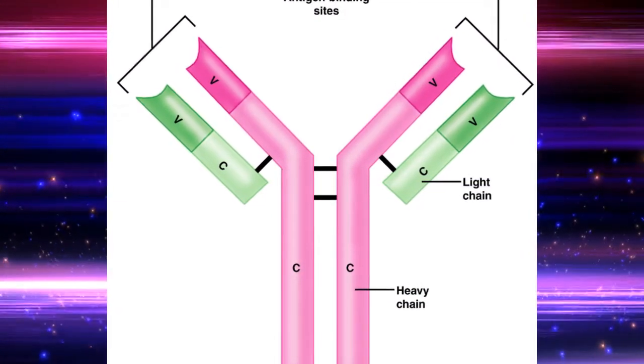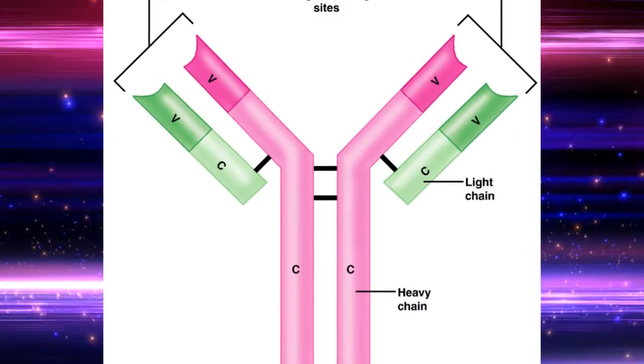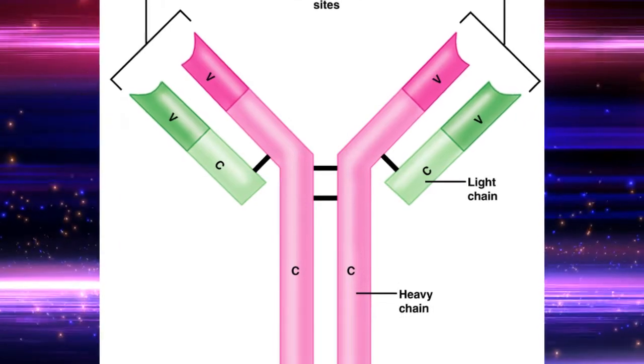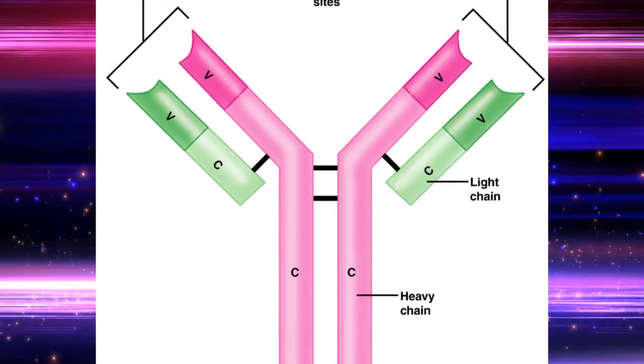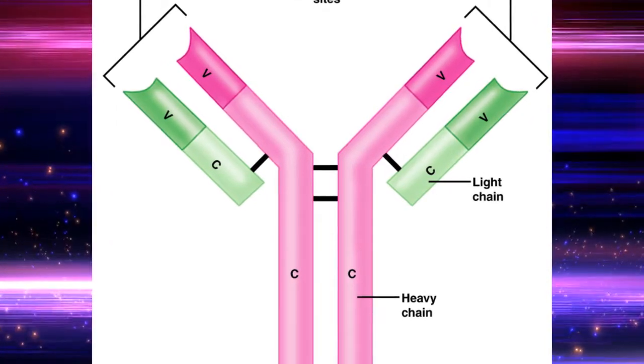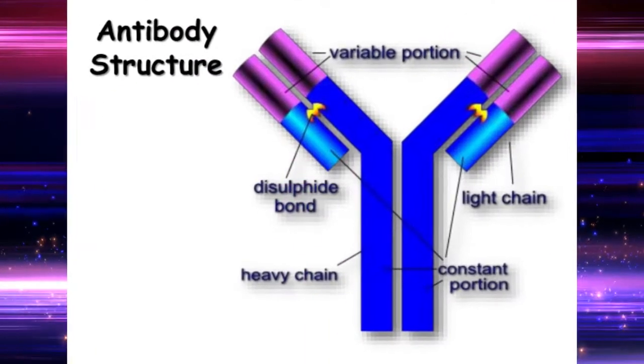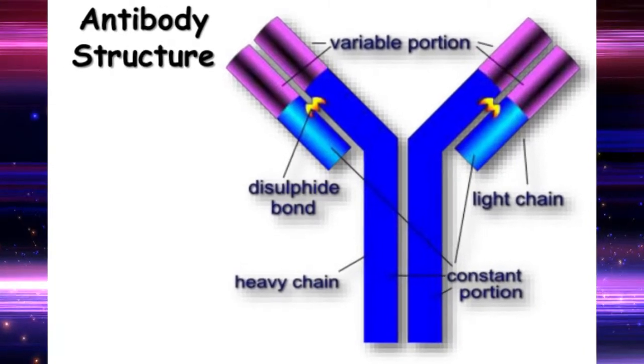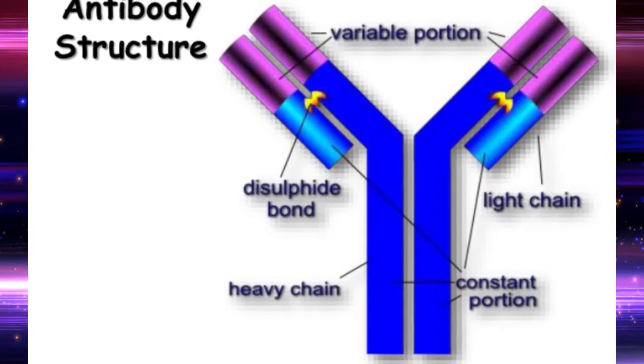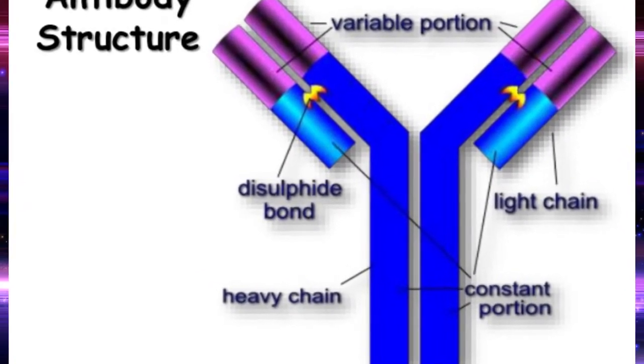Two heavy chains and two light chains are joined to form a Y-shaped molecule. These heavy and light chains are attached to each other by disulfide bonds.